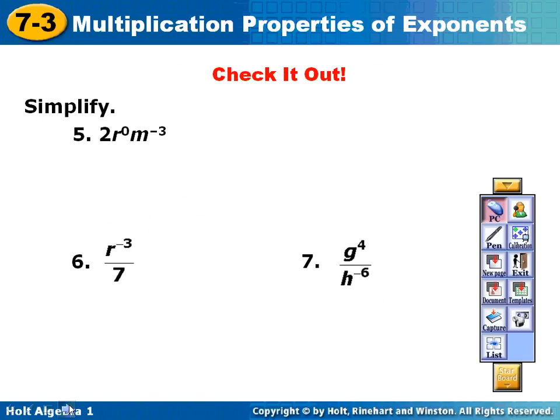Next problem, number 5. There's nothing to plug in, so we're just going to work them out. r to the 0 is 1, so I'm going to cross off the r to the 0. 2 is to the first power, so the 2 goes on the top. m is to the negative exponent, so the m to the third is going to go on the bottom.